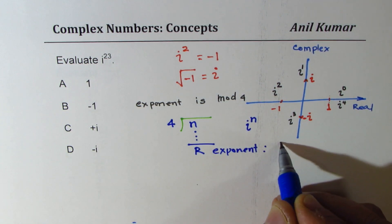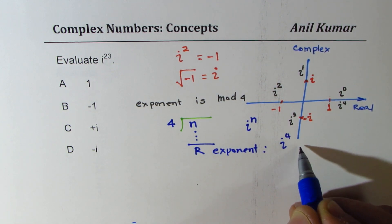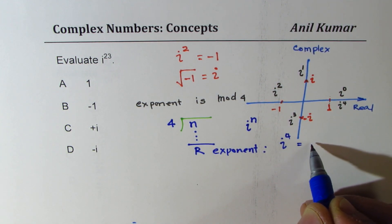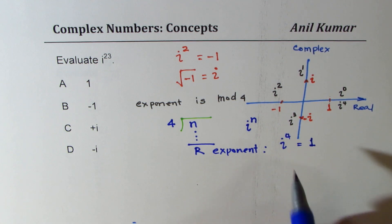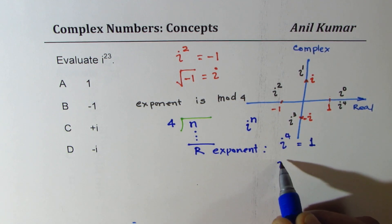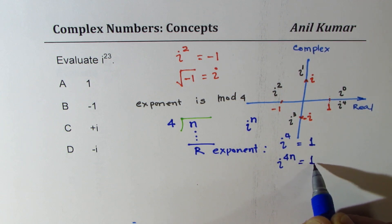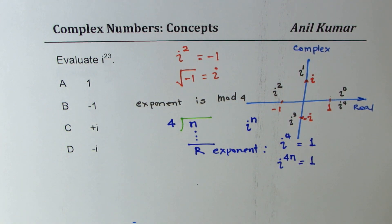Since we know all multiples of 4, that is i to the power of 4 equals just 1, so i to the power of 4n is just 1. That's the whole idea. Now that should help you answer all such questions.